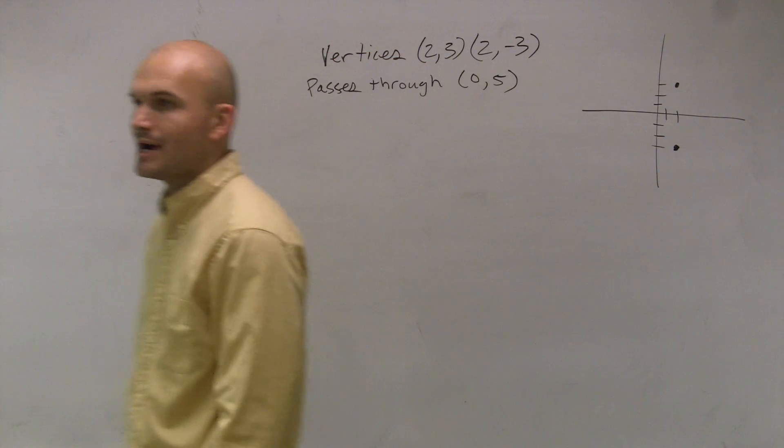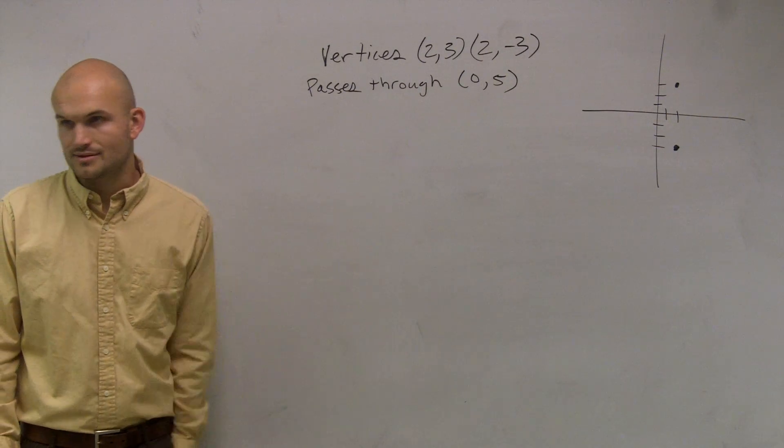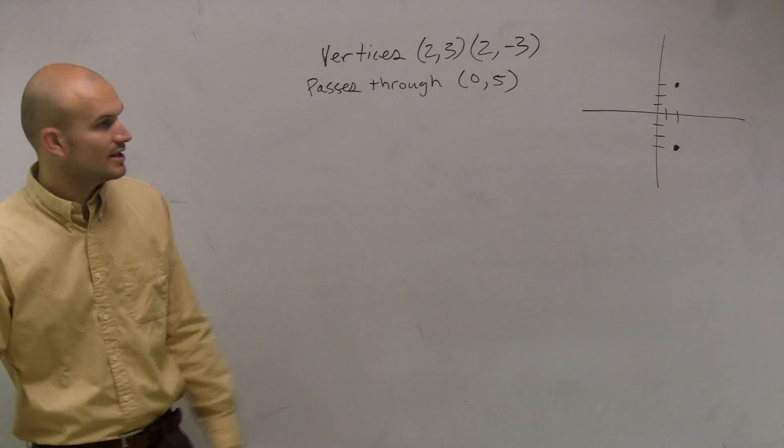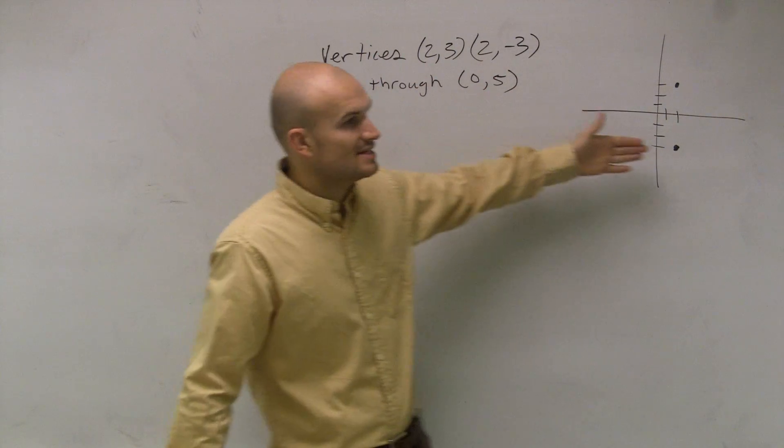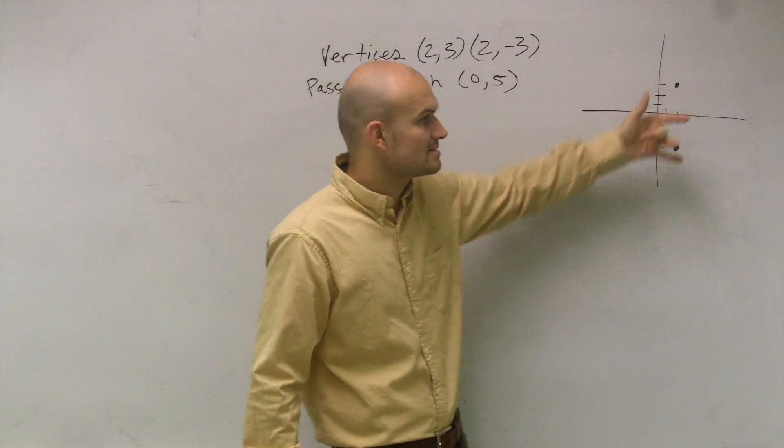So now that tells me what type of hyperbola. Is it going to have an axis that's vertical or horizontal? Vertical, right? Because these are my two vertices. They have to lie on that axis of symmetry.